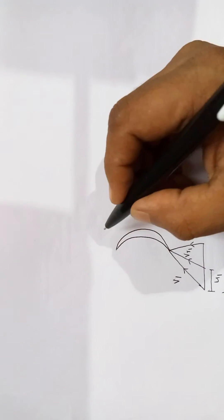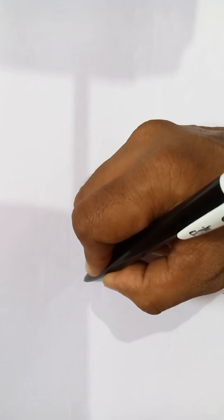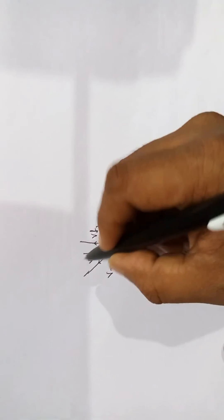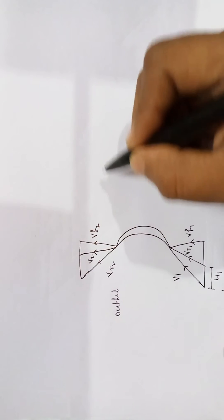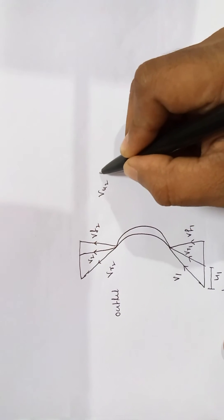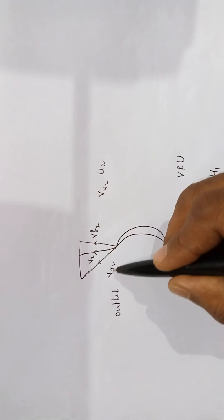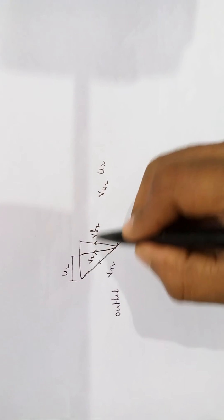At the outlet, the fluid coming from the moving blade is having a relative velocity of Vr2. Vf2 is the axial velocity at the outlet, and once it comes out it is having a velocity of Vu2. At the outlet, there are also two horizontal components, U2 and Vu2. Remembering VRU: absolute velocity is V2, relative velocity is Vr2, and the distance from V2 to Vr2 will give U2.